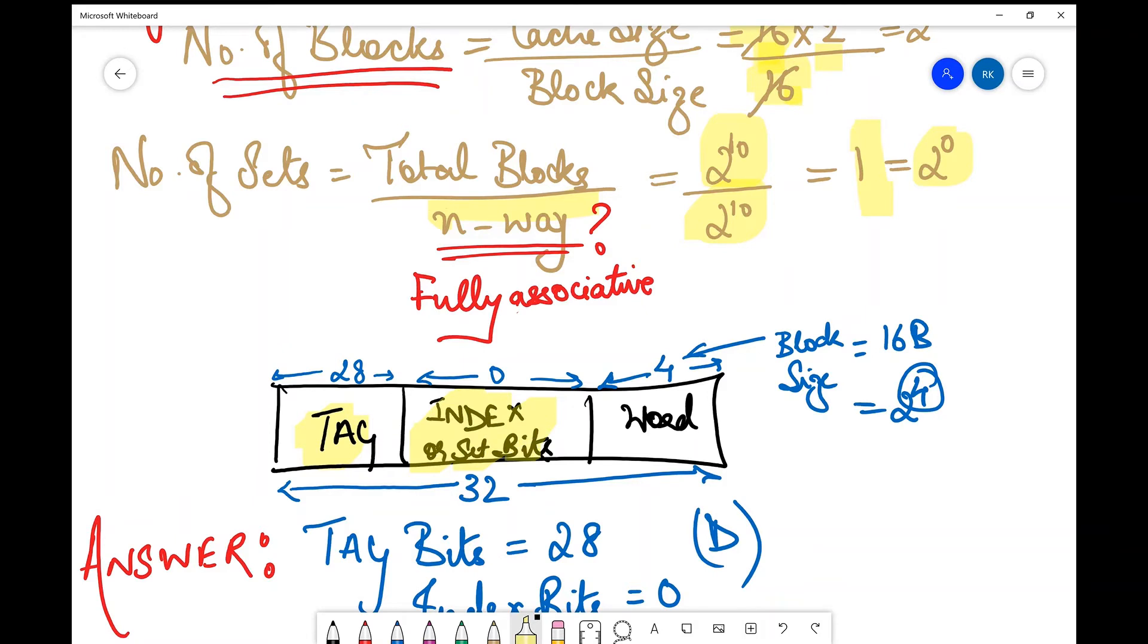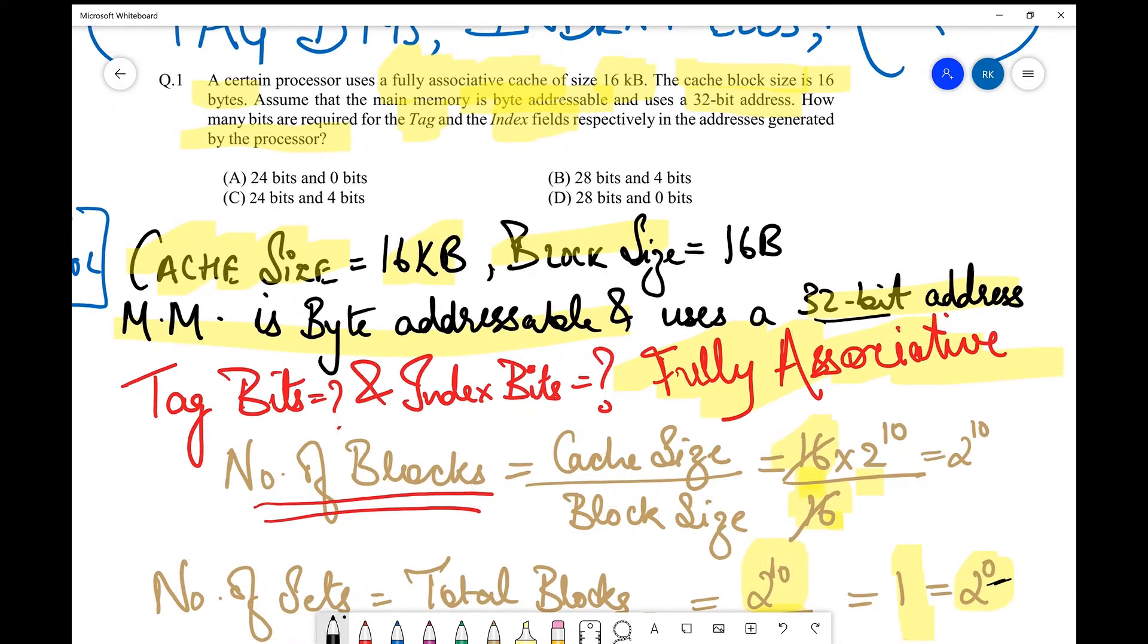Okay, then the final thing comes: representation of addresses. We have the standard format: tag, then I generally write set or index over here, and then word offset. Now word offset comes from block size, which is 16 bytes, so which is 2 to the power 4. Therefore, 4 bits are going to be required over here. And index or set bits are zero, we have already seen, so zero over here, right?